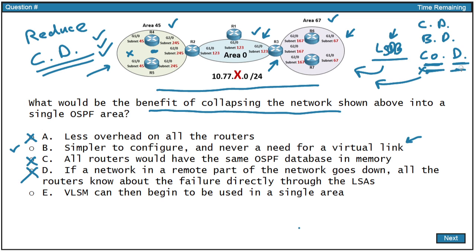Option E: VLSM can then be used in a single area. VLSM is in no way, shape, or form dependent upon the area design that we utilize in OSPF, so E is a false statement. We can use VLSM in the multi-area environment we currently see in our topology. So we've proven that B is indeed our correct answer — it would be simple to configure, and we'd never need a virtual link because we'd never have an area separate from area zero that needs to be connected that way.